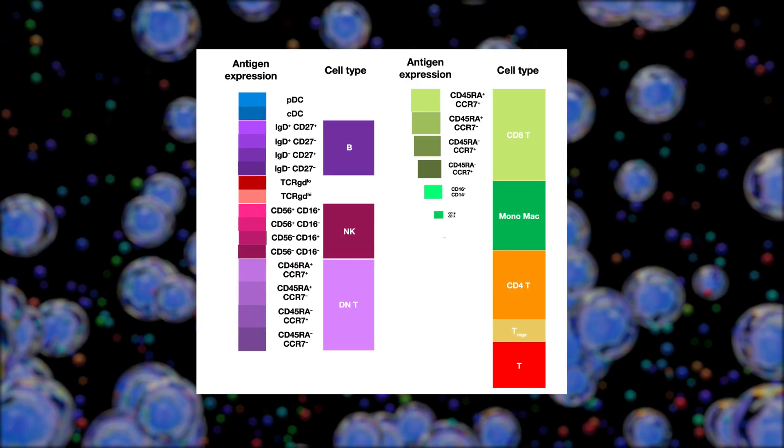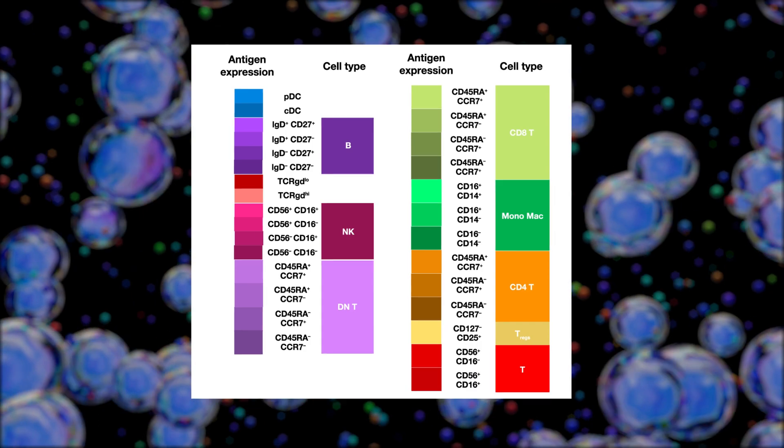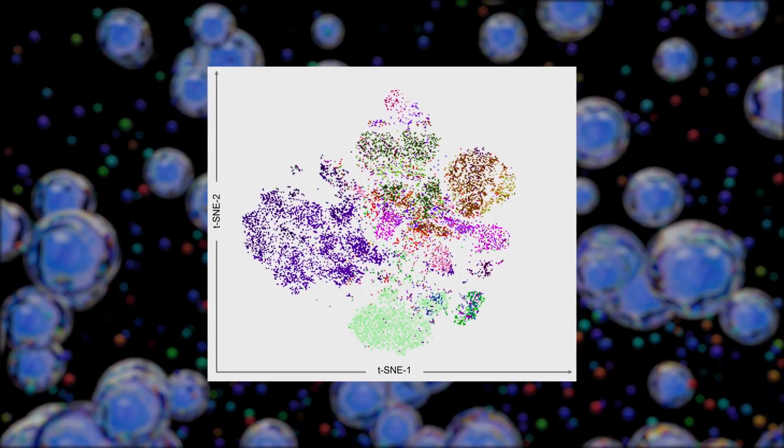Spectral flow cytometry makes it possible to add more fluorochromes to your panel and achieve high-parameter and multidimensional datasets.